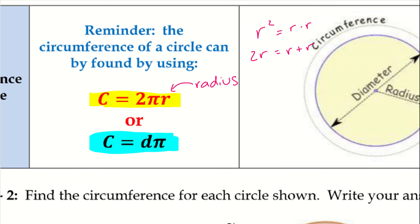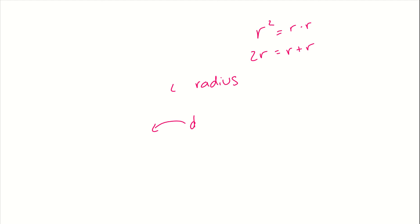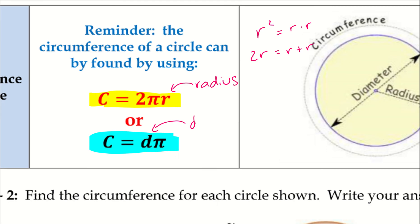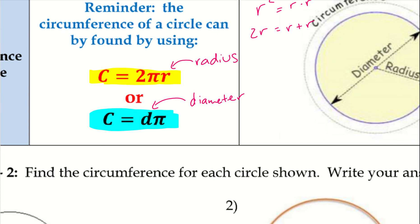We have the radius, or we can use the diameter. If you are given the radius, you have to make sure you multiply it by 2 before you put the pi next to it, because we are using the diameter distance. So if you're given the radius, just make sure you multiply it by 2 to find what you're looking for.